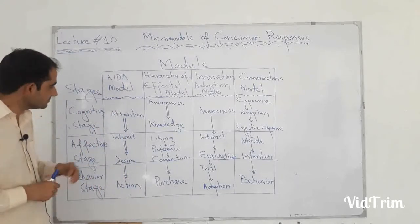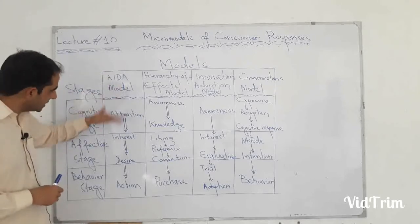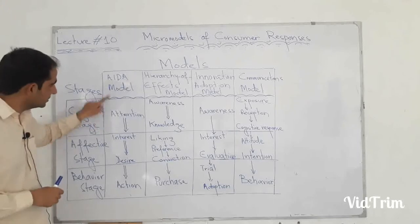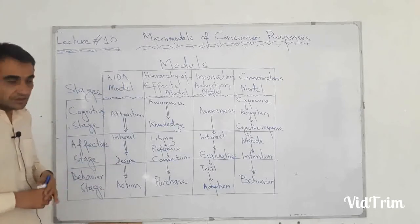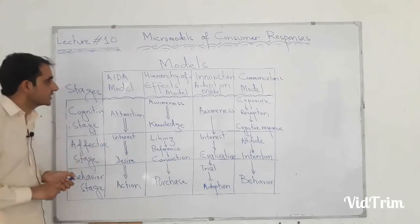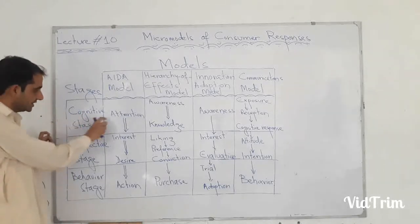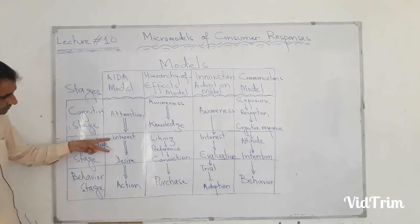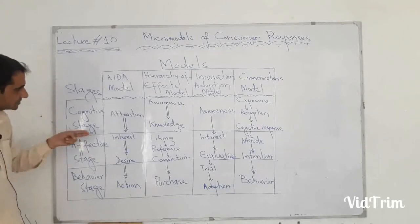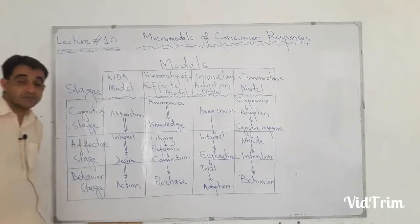Model number one is the AIDA model. AIDA is an abbreviation — A for attention, I for interest, D for desire, and A for action. This model is divided into three stages: in the cognitive stage we have attention; in the affective stage we have interest and desire; and in the final behavior stage we have action.